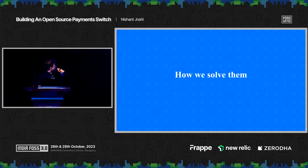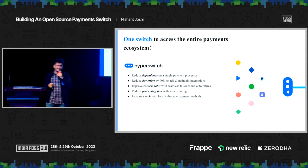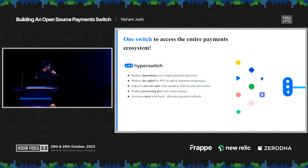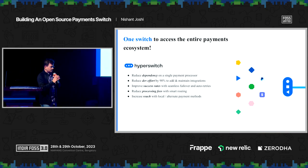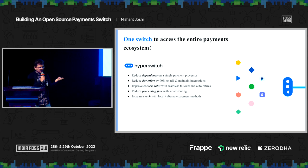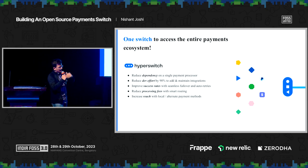This is how we try to solve it. Firstly, it's about reducing the dependency on a single processor and significant dev effort. You should not waste your time developing something in the payments domain if you're building something really great. The ideology is: just leave that part to us, and focus on developing whatever you are building.